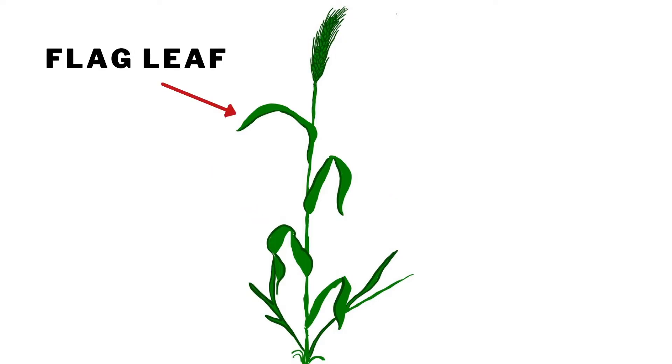The last leaf produced from the stem, the flag leaf, becomes more narrow from about the lower third, giving the leaf an elongated ovate shape.